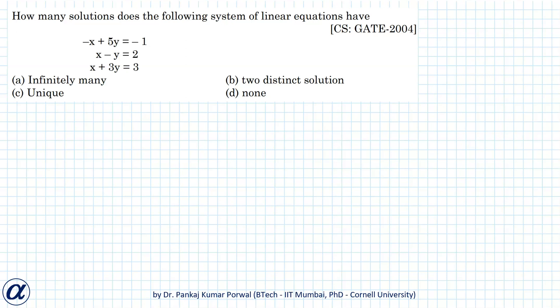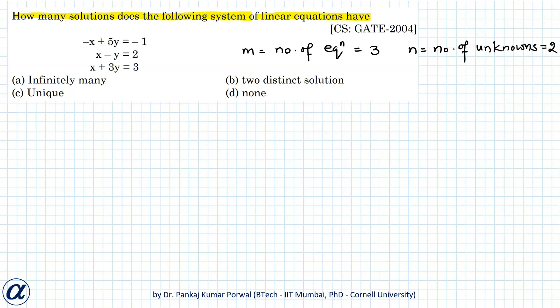In this question we want to find how many solutions the following system of linear equations has. The number of equations is three and the number of unknowns is two, so we have three equations in two unknowns. Because the number of equations is different from the number of unknowns, we will use the rank method to find that.